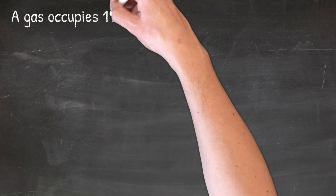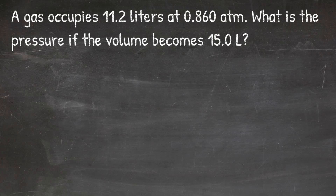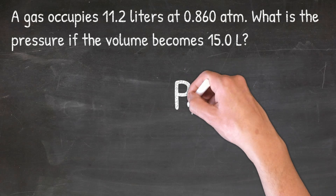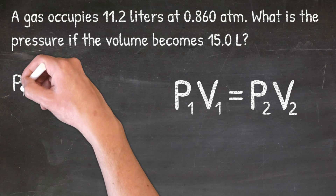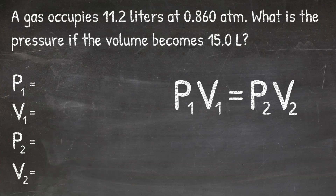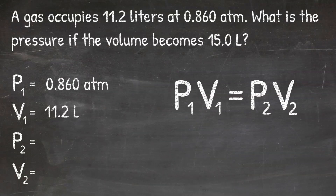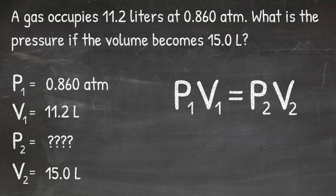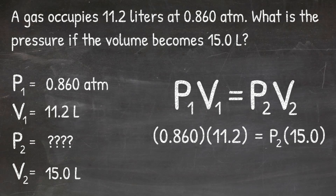In our next example, a gas occupies 11.2 liters at 0.860 ATM. What is the pressure if the volume becomes 15.0 liters? We look at our variables: liters represents volume and ATM represents pressure. Since only pressure and volume units are given, we use the Boyle's Law formula P1V1 equals P2V2. So V1 is 11.2 liters, P1 is 0.860 ATM, we are solving for P2, and V2 is 15.0 liters.